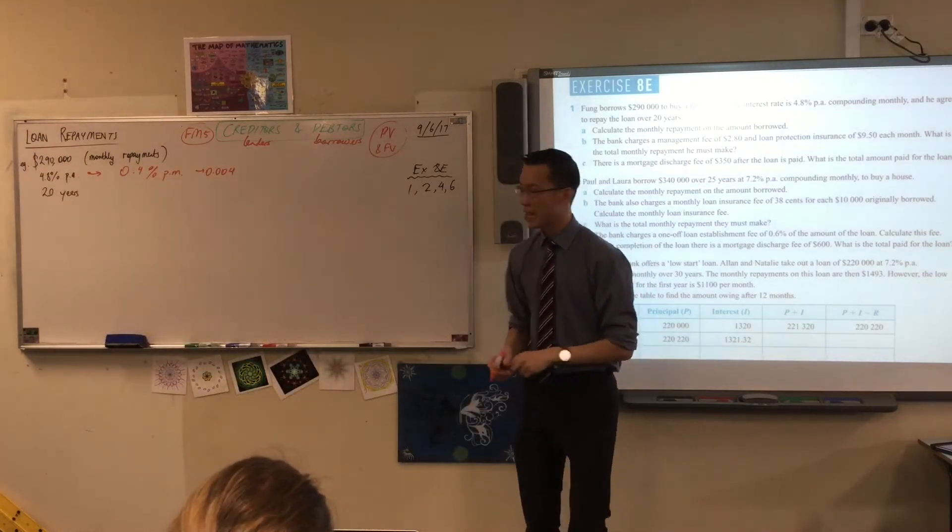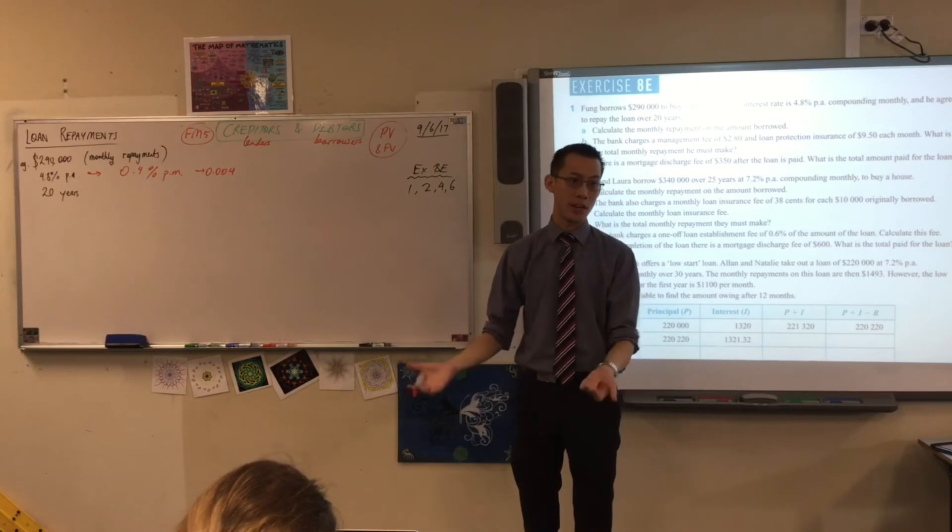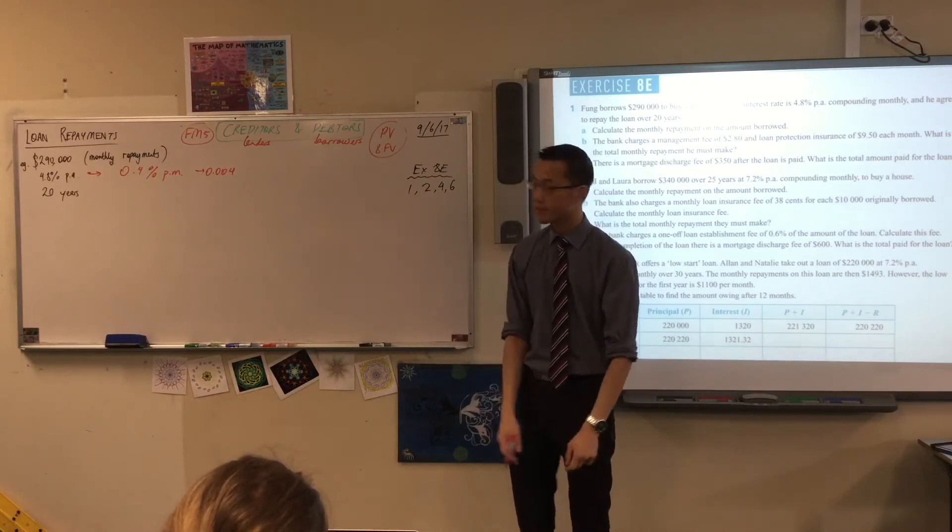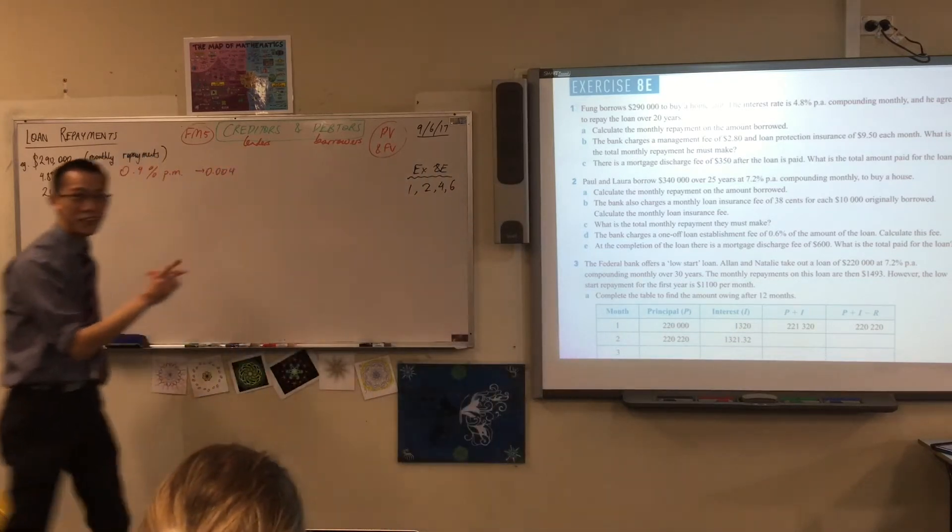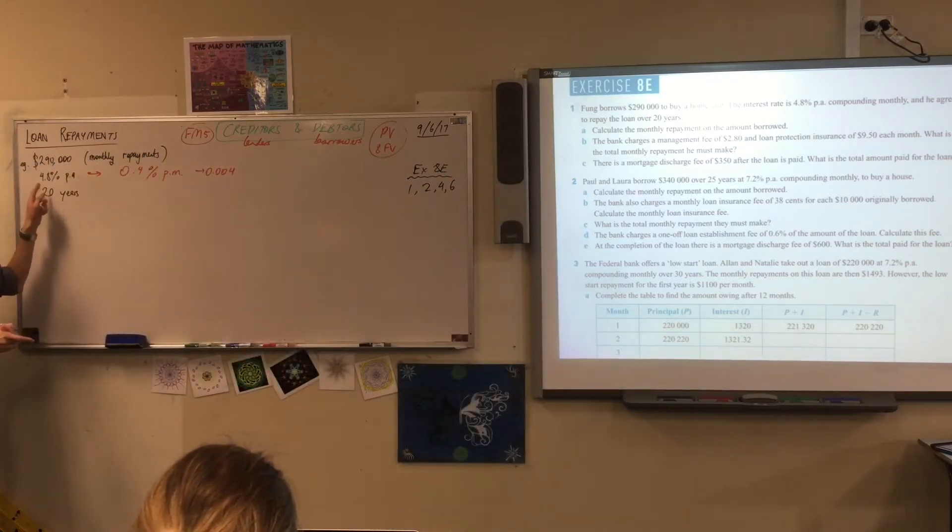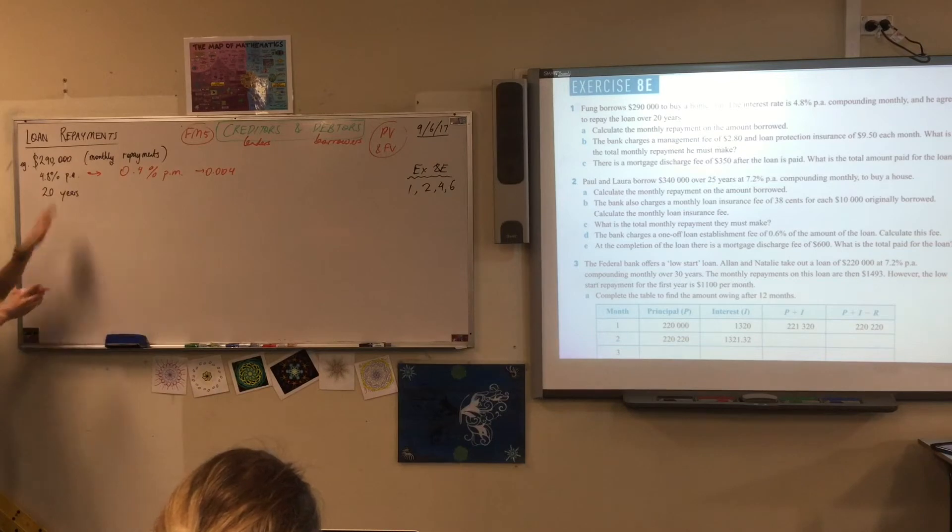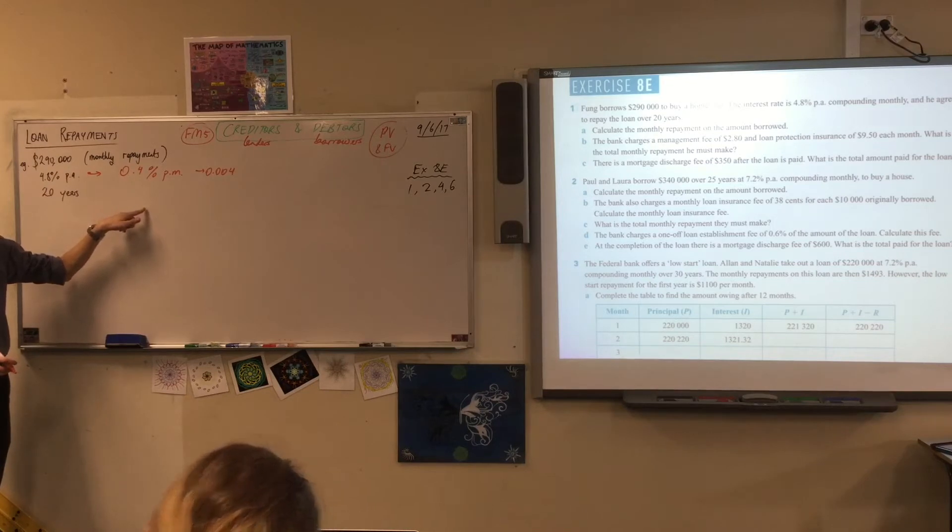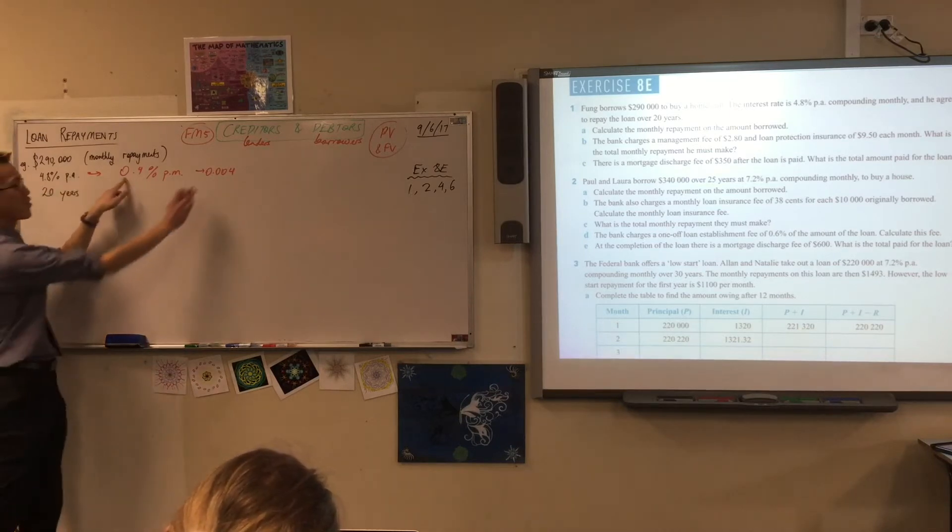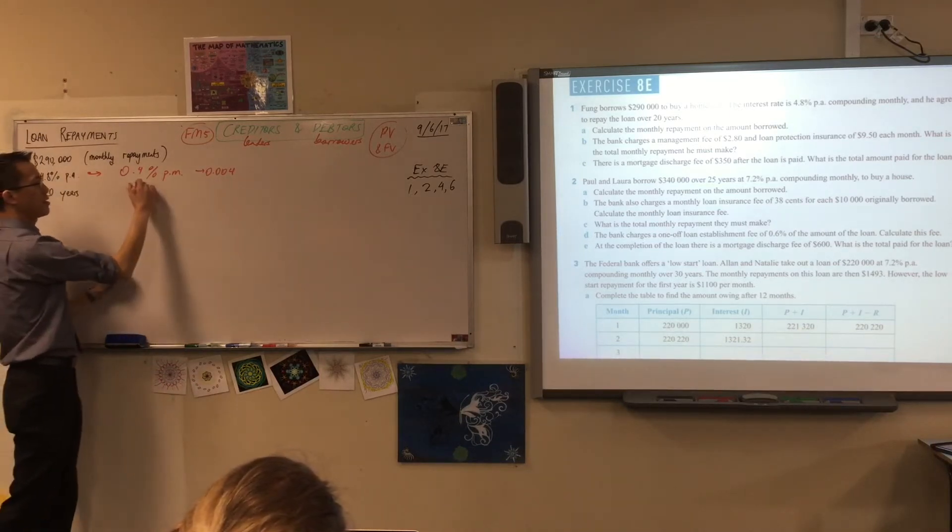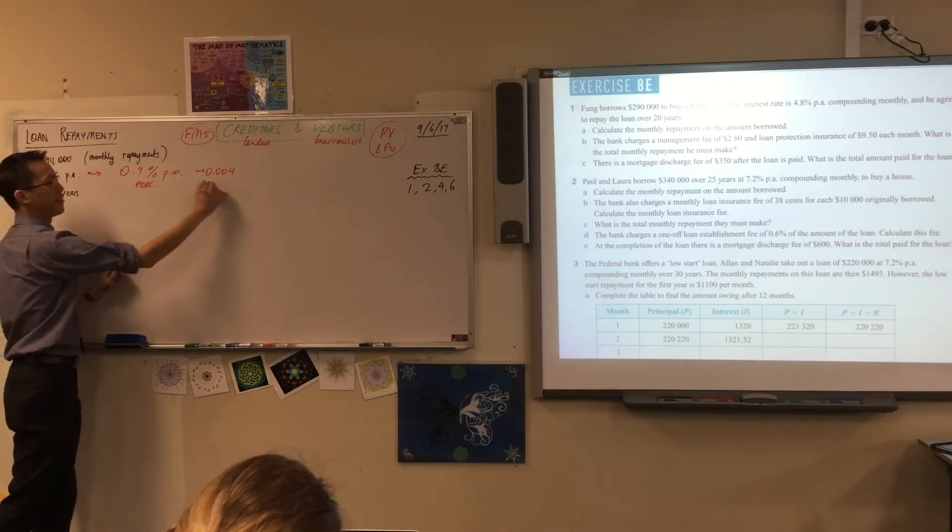So if you put in 4.8 in your calculator and you didn't type in the percent sign and you divided that by 12, you'll get 0.4, right? And that's a percentage. But if you typed in 4.8%, the percent is divided by 100, which is why you can see the difference in the decimal points. This is the percentage and this is the decimal.